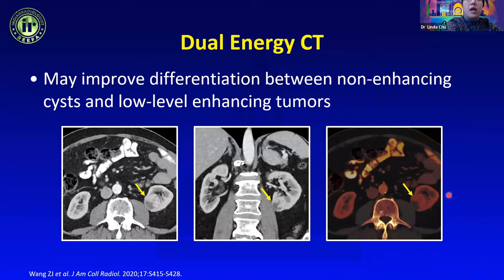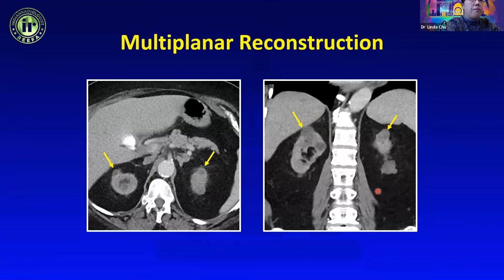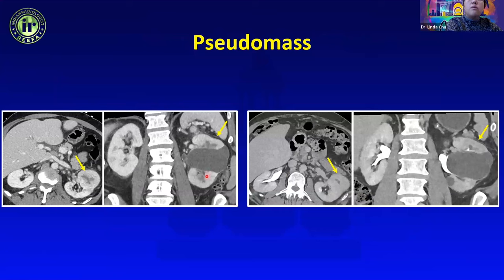In our practice we stick with the traditional four-phase protocol because measurements are more reliable. With CT it's also important to look at multi-planar reconstruction, because small lesions at the upper and lower pole of the kidney can easily be missed on axial images alone. Coronal reconstructions are very helpful for those lesions, and 3D reconstructions help with vascular mapping to assist the surgeon in planning surgery.